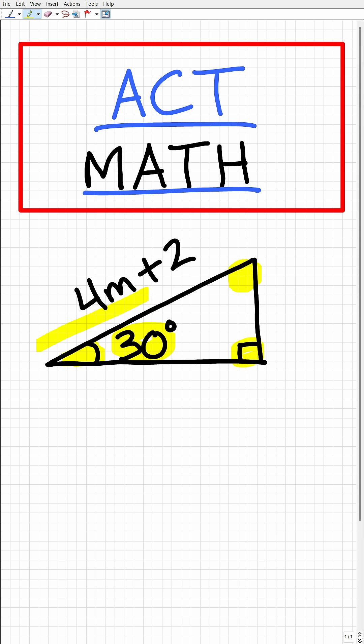Okay, now the length of the hypotenuse here is 4m plus 2. So my question to you is what are the sides of this special right triangle?